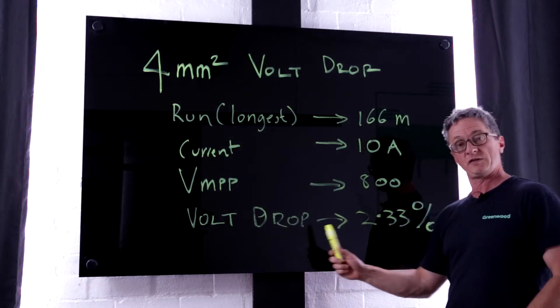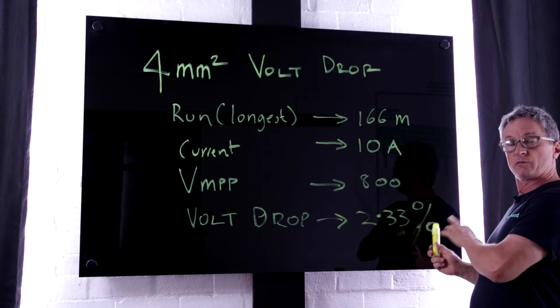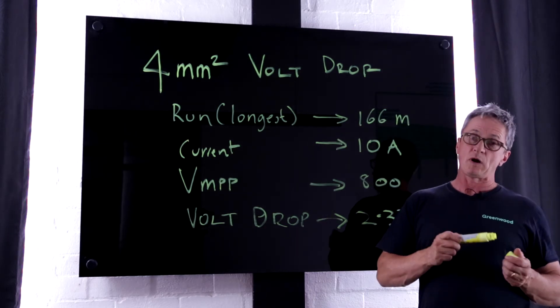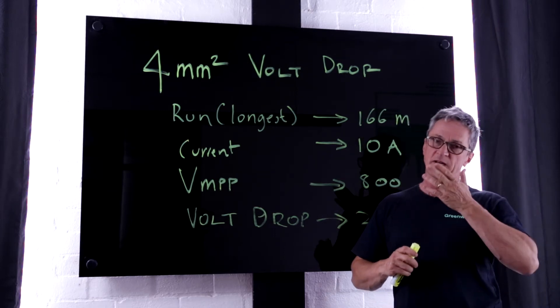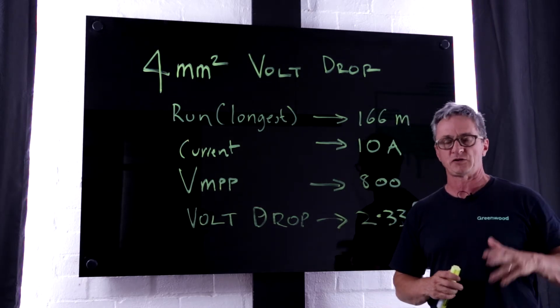The volt drop percentage in this case is 2.33%. Now it probably will be higher because we haven't taken into consideration some bends dropping down into the trench and a few other things.